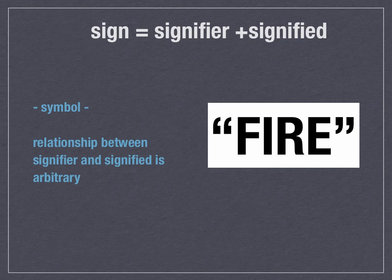Review one more time: Index — causal relationship between signifier and signified. Icon — physical resemblance between signifier and signified. Symbol — arbitrary relationship; it only means that because we all agree it does. We could stop agreeing tomorrow and it would stop meaning it.